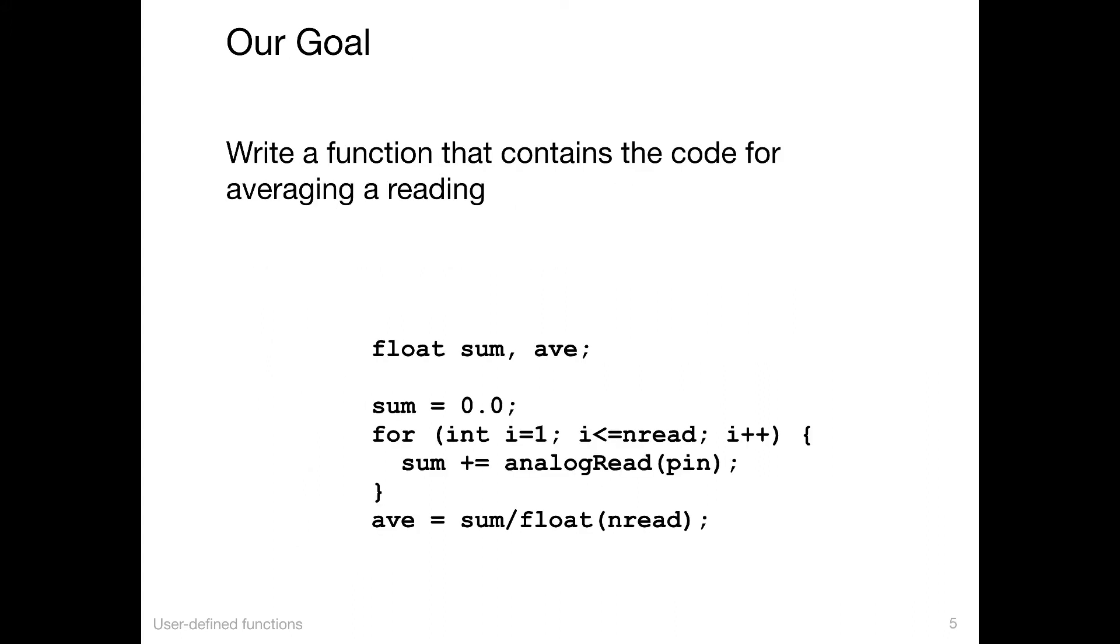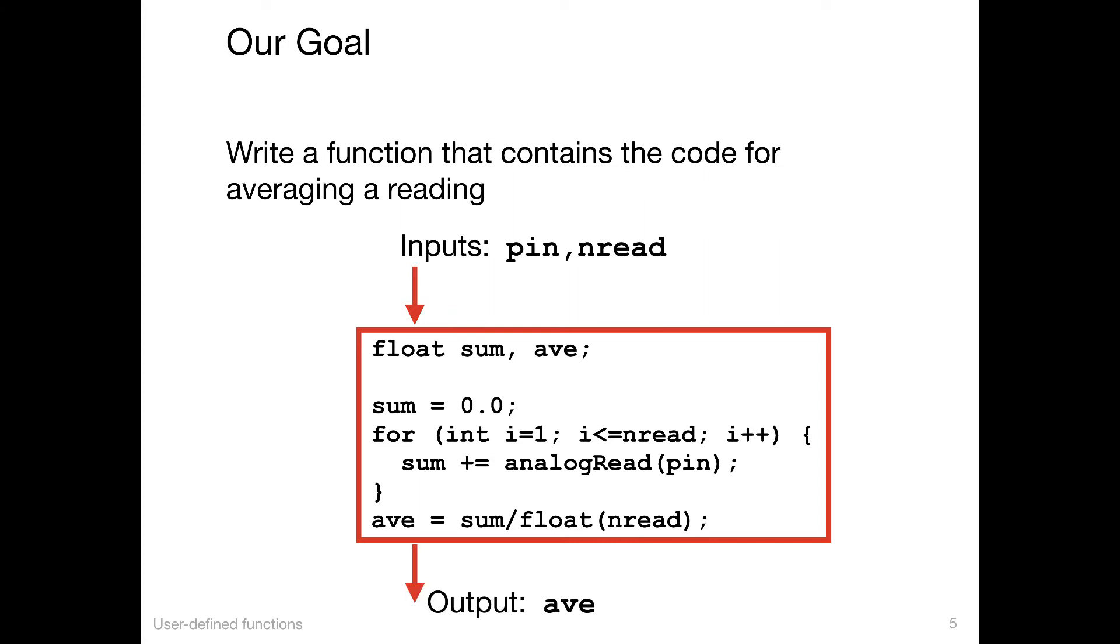Here's our code again. And what we want to do is create a module that does this. So the code is there, it's correct to be used. But if we're going to create a module, let's put a box around this code. And figuratively, this is our function, and it has inputs that we're going to supply: pin, the analog input channel pin number, and nread, the number of readings we want to make on that pin. The output is average. The goal is to create a module that can be used for any pin and separately any number of readings.